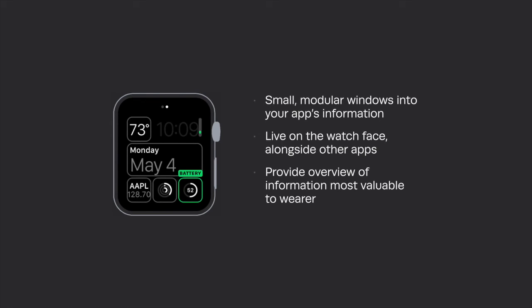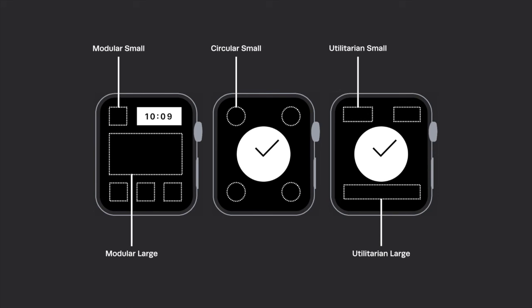You get modular small complications — the small squares in the corner — and modular large, which are large rectangles in the middle. Then there are circular small — the small circles in the corner — and utilitarian small and utilitarian large rectangles that take up the full width of the watch face.